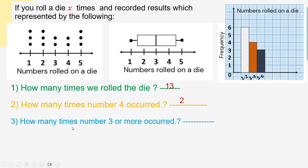The next question: how many times did number 3 or more occur? We can use the dot plot — counting the dots for 3, 4, and 5: 2 plus 2 equals 4, plus 3 equals 7. Can we use the box plot? No. What about the histogram? Yes, this time we can, because 3 and more corresponds to full intervals. Adding 4 plus 3 equals 7 — the same answer. The answer is 7.